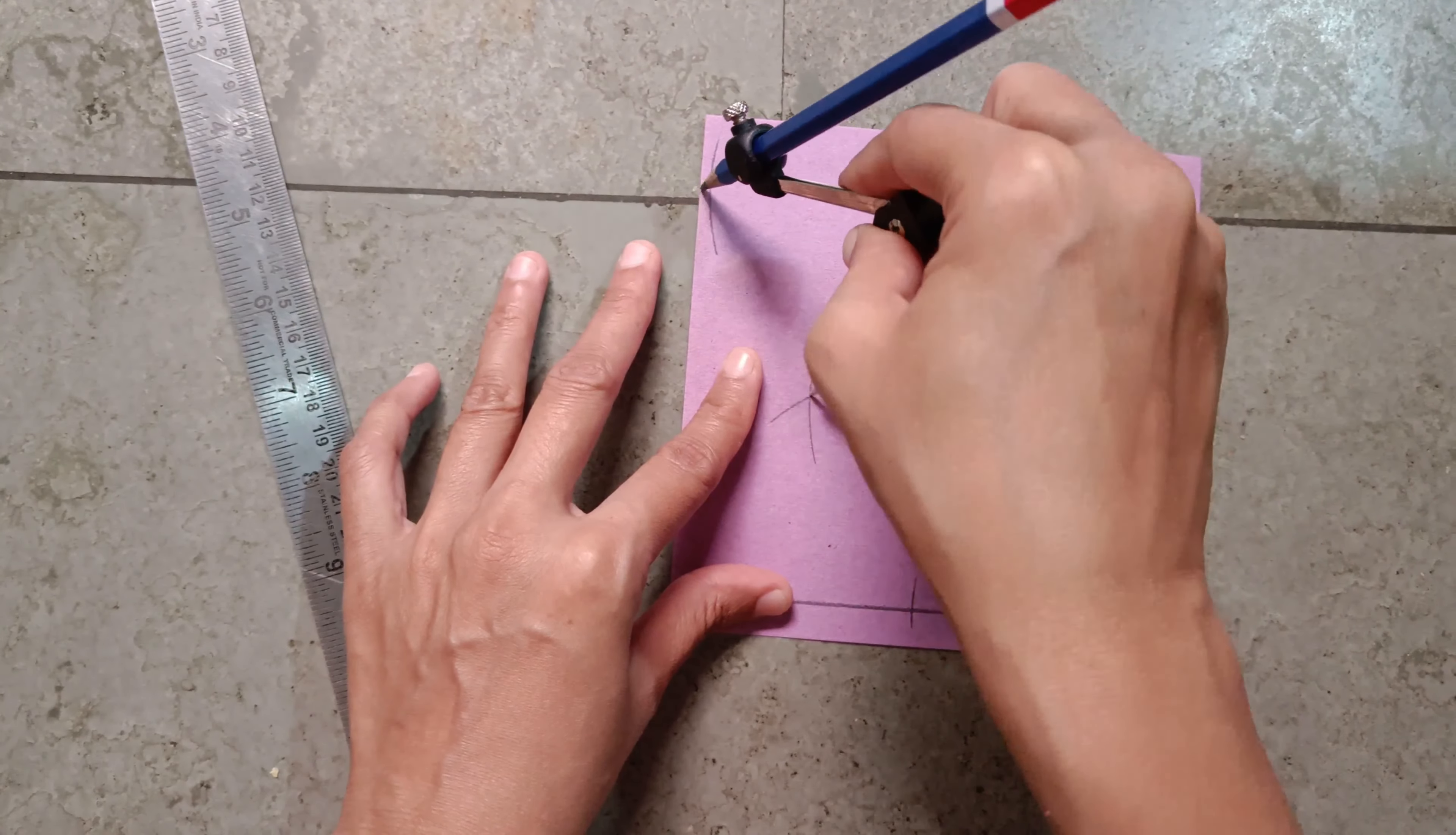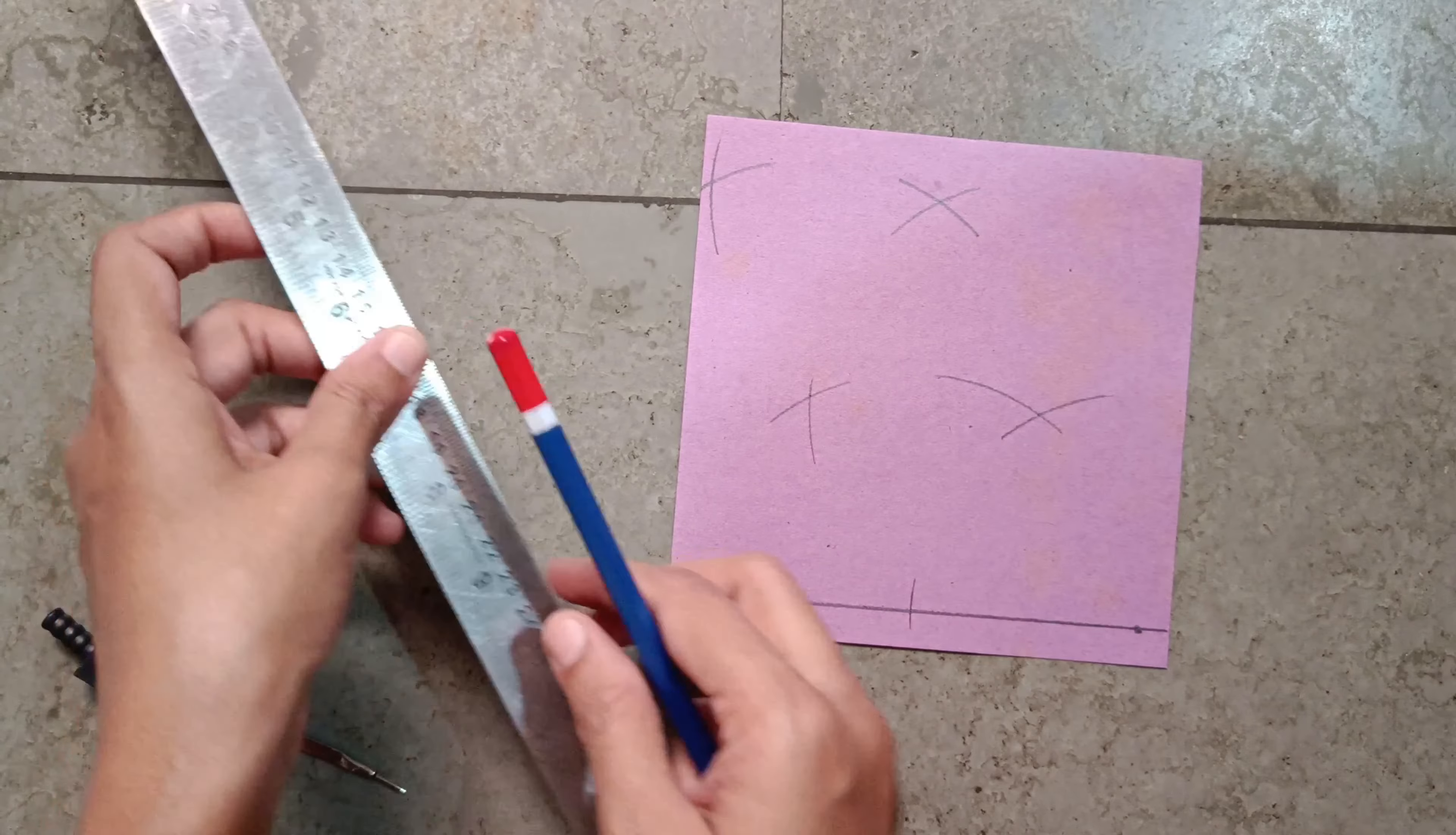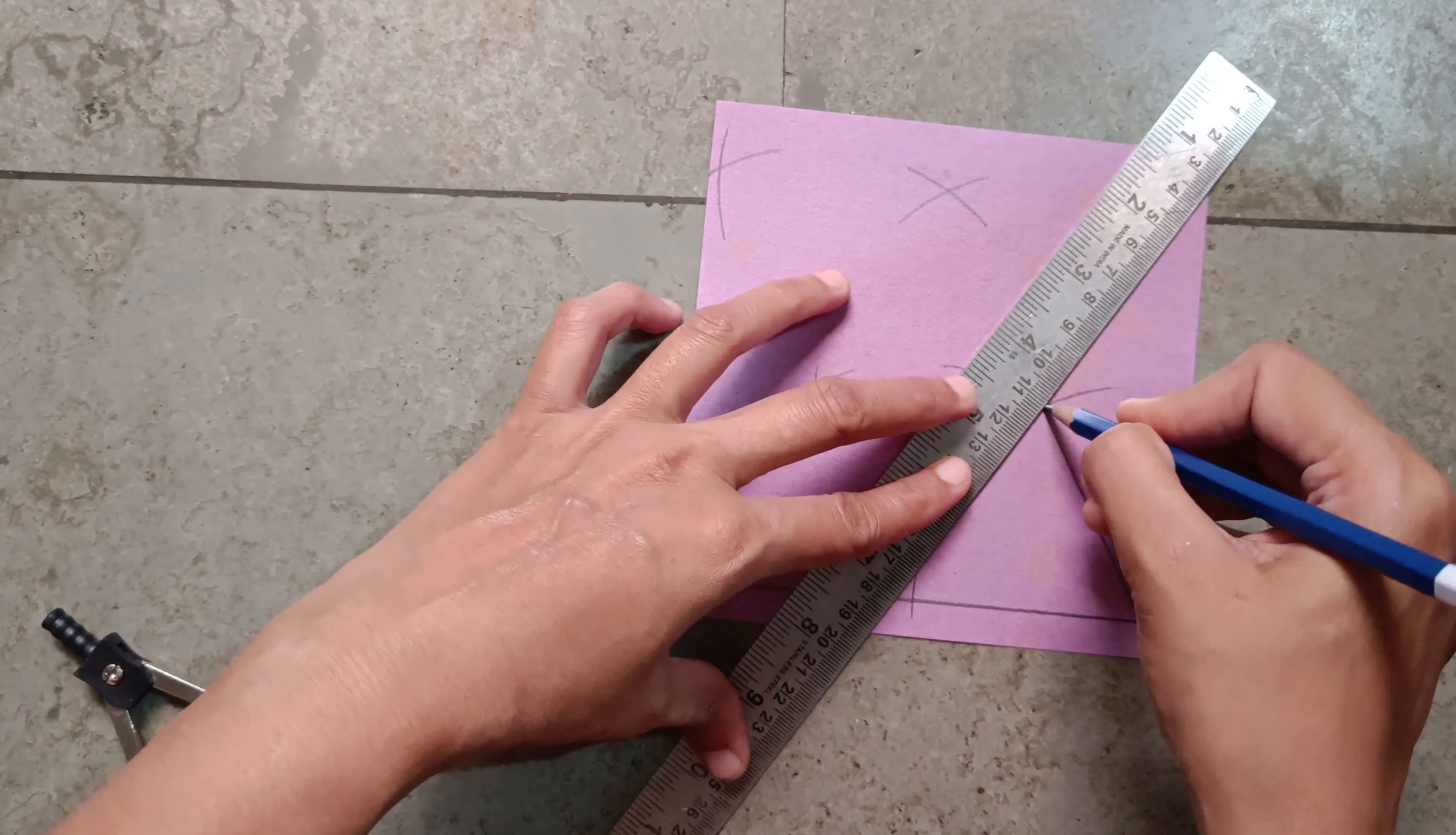On this point again make a curve. Then draw a line from this point to this point.